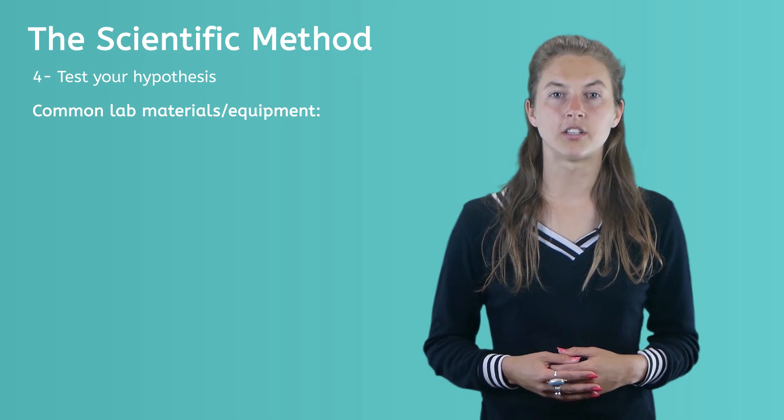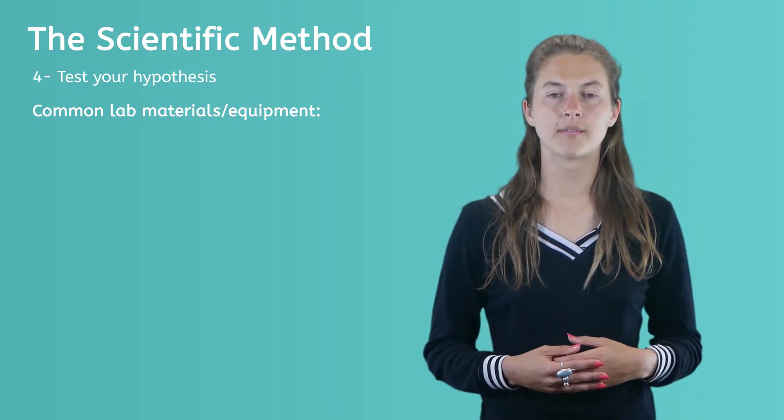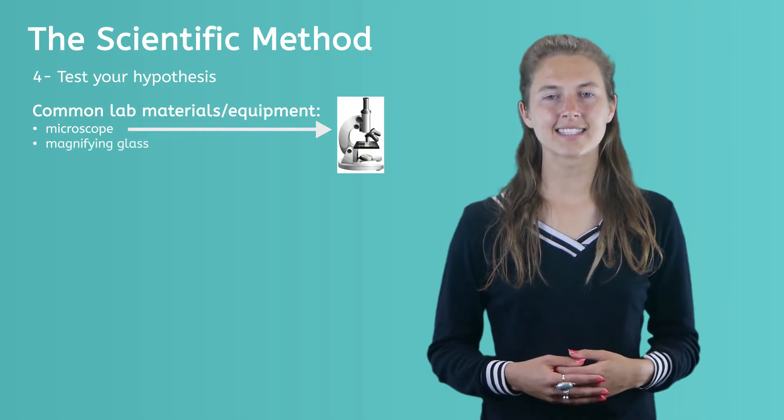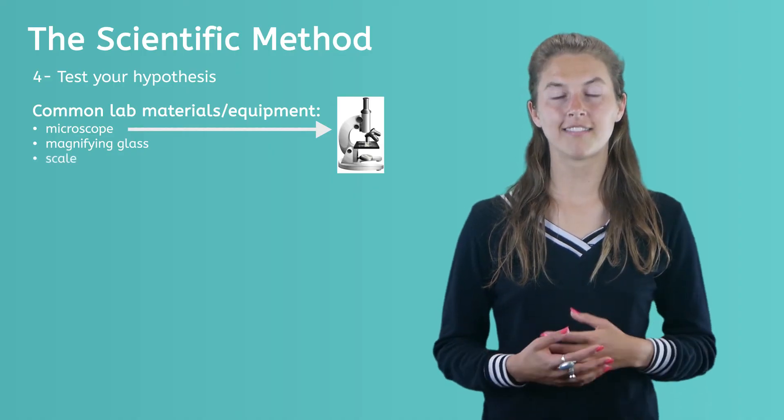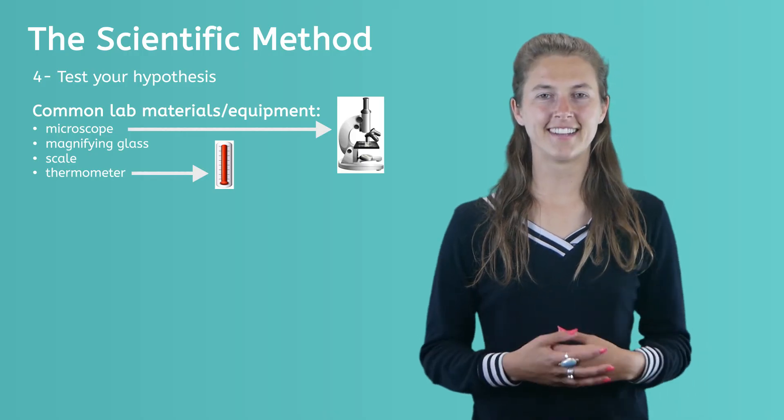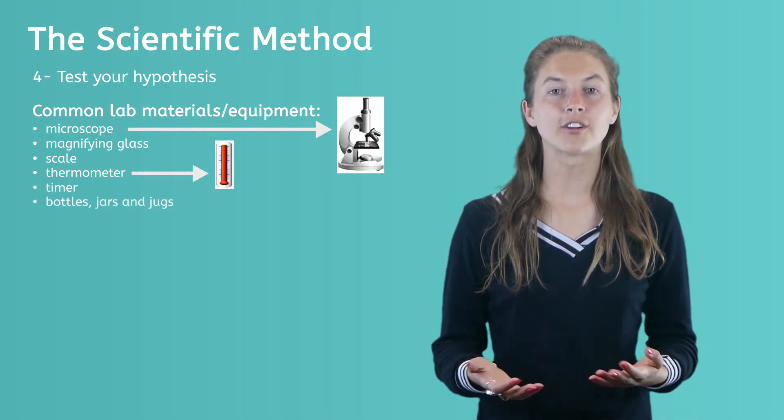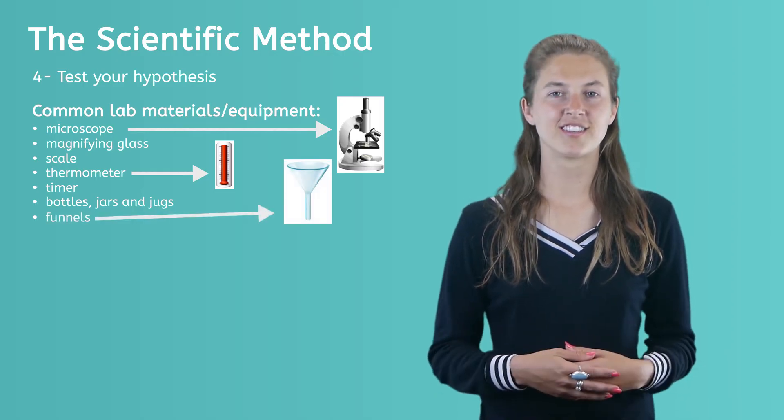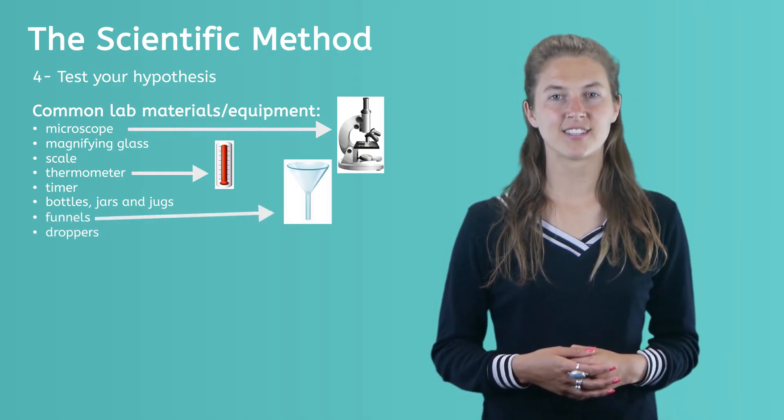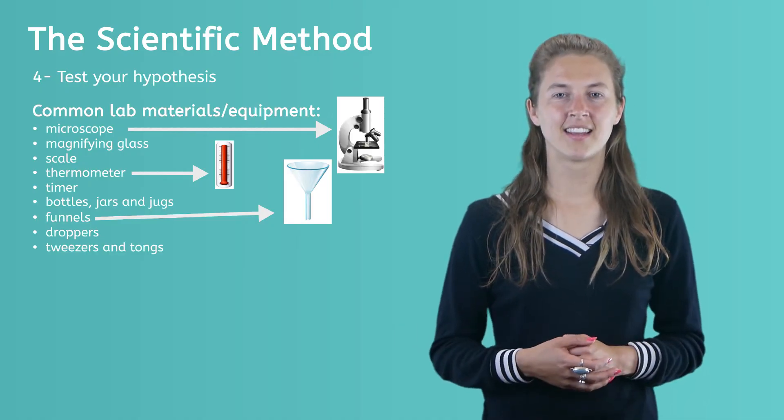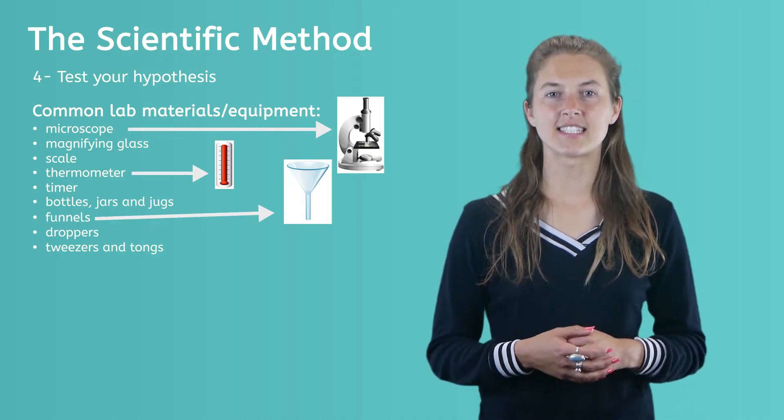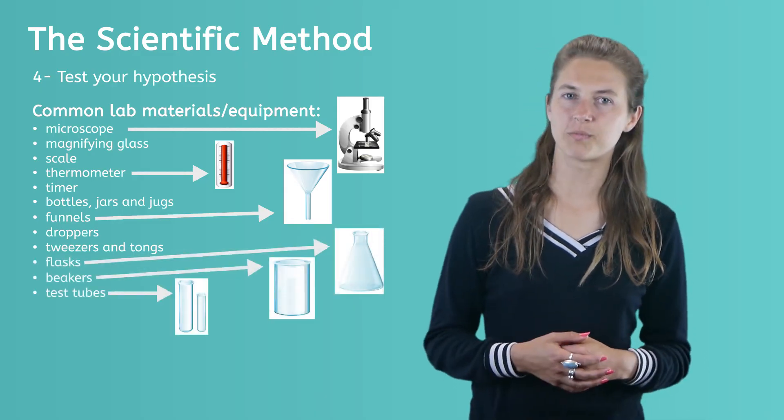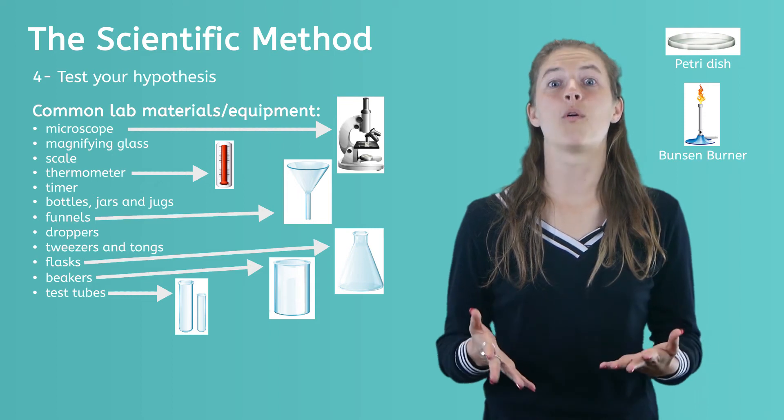Common lab materials or equipment include a microscope, a magnifying glass, a scale, a thermometer, a timer, bottles, jars, and jugs, funnels, droppers, tweezers and tongs, and some fancy science equipment like flasks, beakers, and test tubes, and many more.